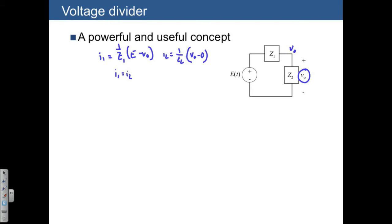So we see that 1 over Z1 times E minus VO is equal to 1 over Z2 times VO. If we collect the VO terms, we see that we have 1 over Z1 times E is equal to 1 over Z1 plus 1 over Z2 times VO.